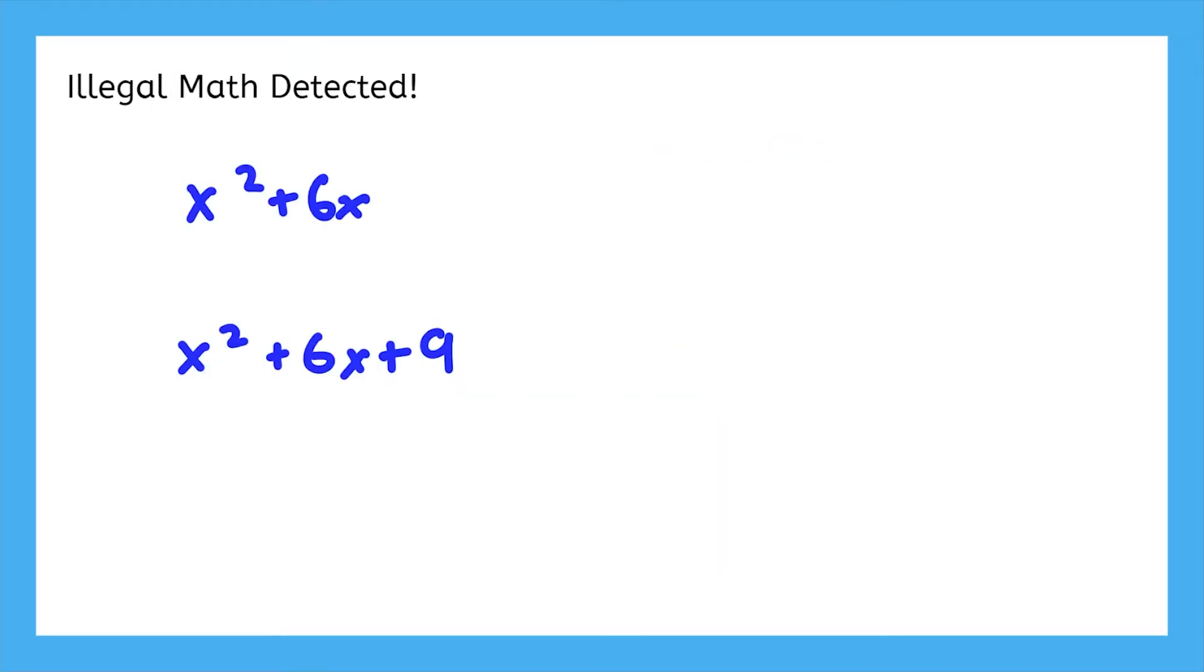It's important to note that the original expression and what we factored are not the same. You can't just add 9 and expect it to be the same value. What we did there broke a major algebra rule. If you add something to one side, you have to do the same to the other side.